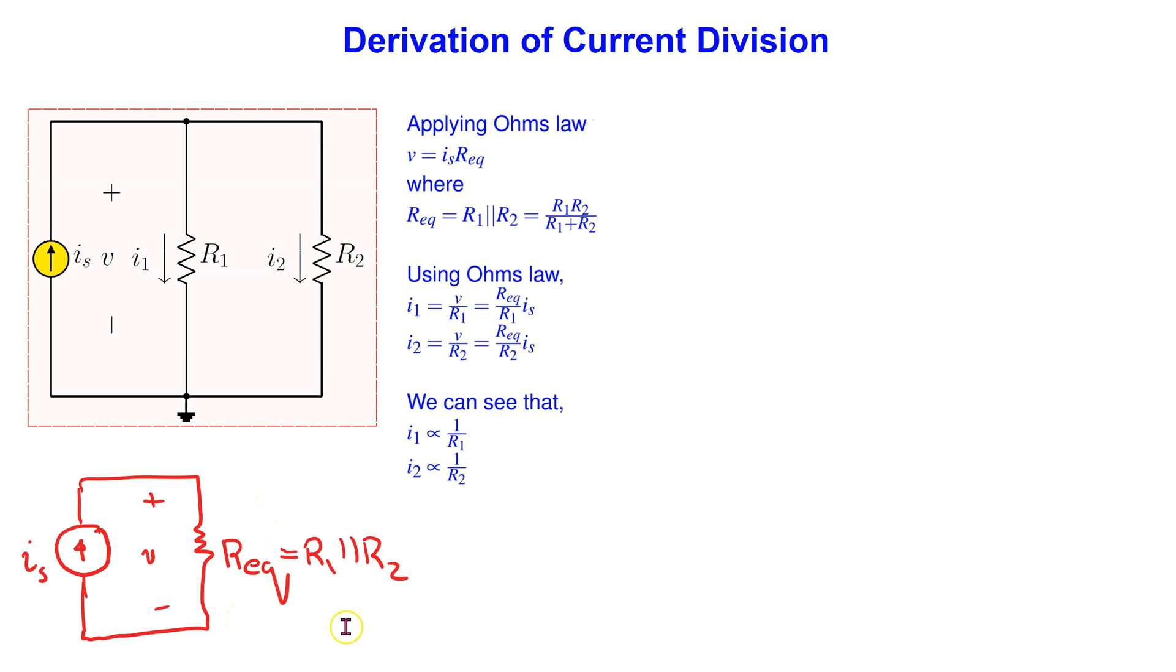Applying Ohm's law to the equivalent resistor, we can see that voltage V is IS times the equivalent resistance. Now going back to the original circuit,